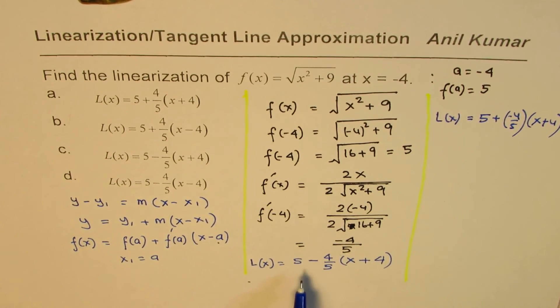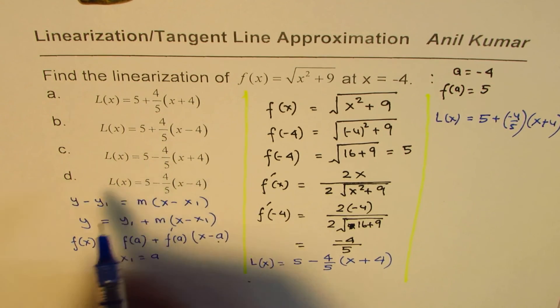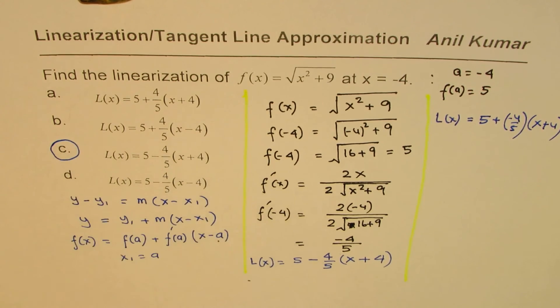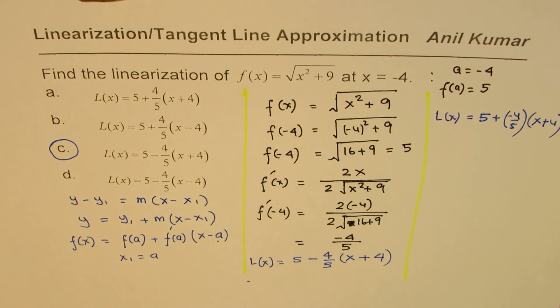So let's match which one works for us. 5 minus 4, that is the one. So c is the right answer for us. So I hope you understand the concept, and that is how we actually find the equation, which can help you to approximate the values close to x equals to minus 4 in this particular case. I'm Anil Kumar. You can always share and subscribe my videos. Thank you, and all the best.